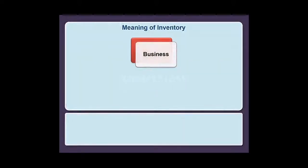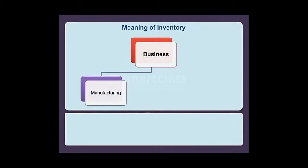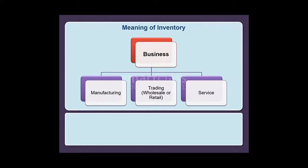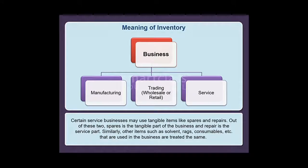Businesses can be of three types: manufacturing, trading (wholesale or retail), and service. In this module we shall limit our discussion to manufacturing and trading business and not include the service sector. Certain service businesses may use tangible items like spares and repairs — spares being the tangible part and repair being the service part. Similarly, other items such as solvents, rags, and consumables used in the business are treated the same way.